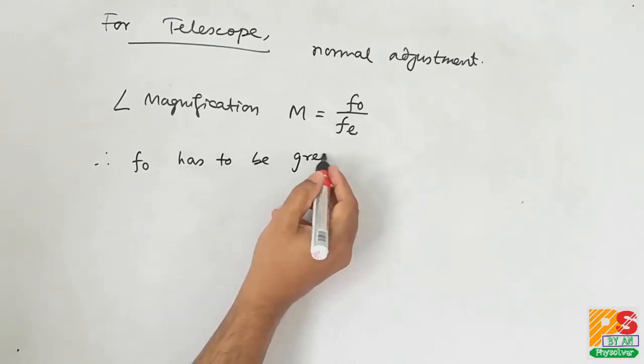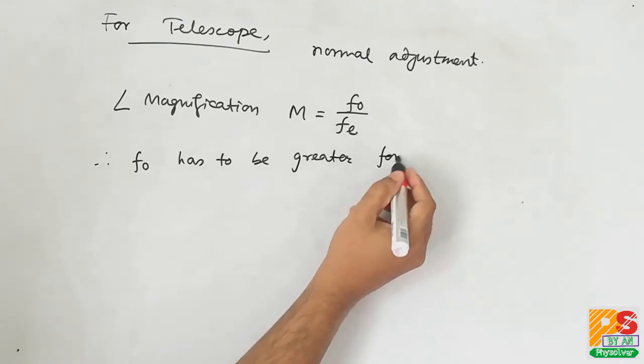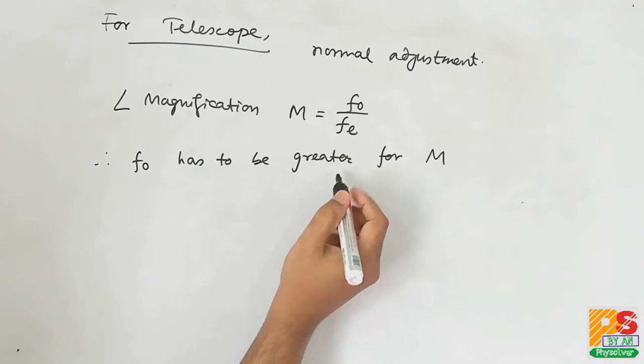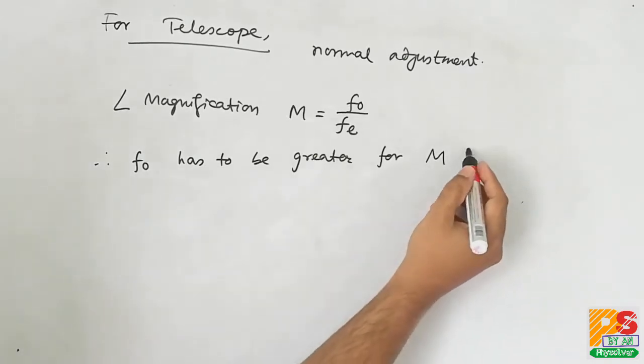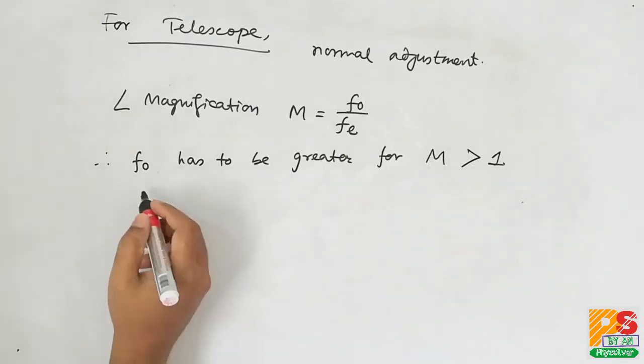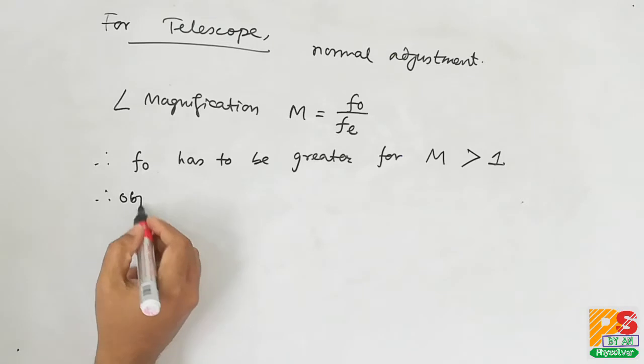Therefore, fo has to be greater than fe in order to make M greater than one. We should have an angular magnification greater than one, so the focal length of the objective lens should be greater.